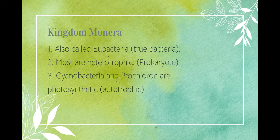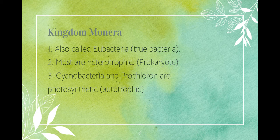Up next, we have our Monera. These are our most common bacteria. These are prokaryotes. They're also heterotrophic, meaning that they rely on other types of organisms and ingesting or absorbing those other organisms to get food. We do have some exceptions — Cyanobacteria and perchlorons are both photosynthetic.